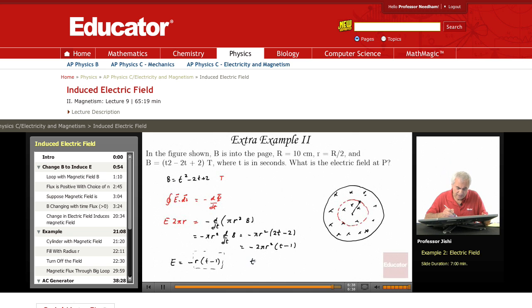So for t less than one, E is clockwise, and for t greater than one, E is counterclockwise.